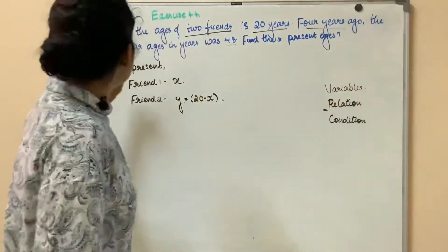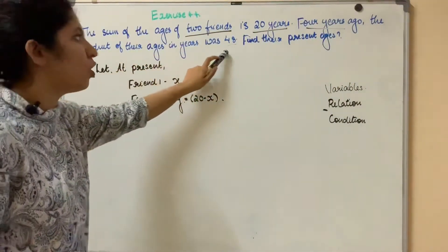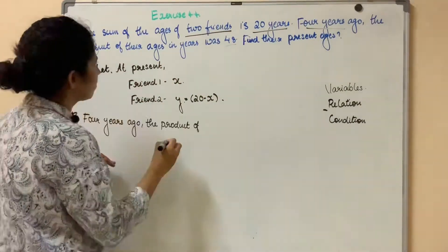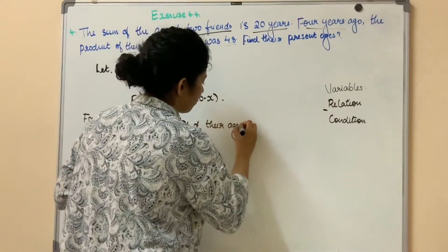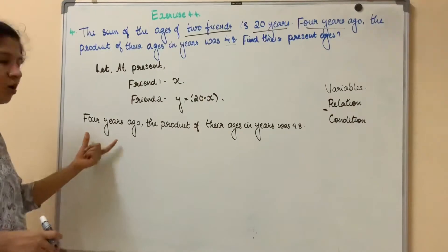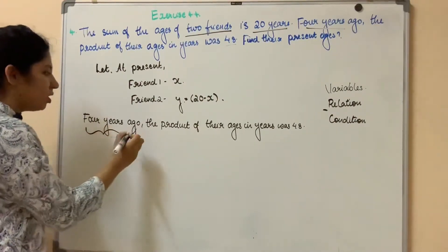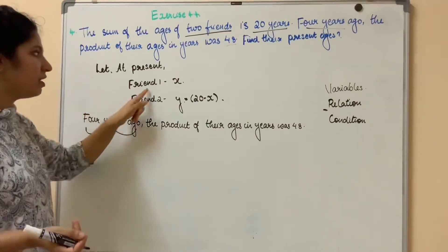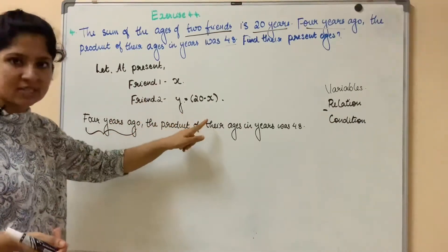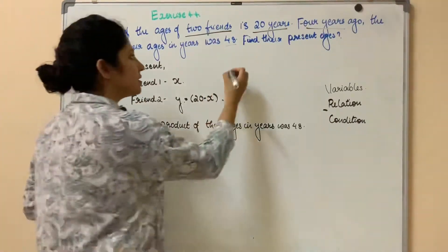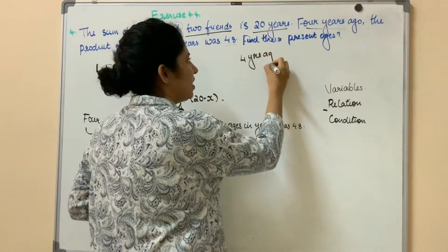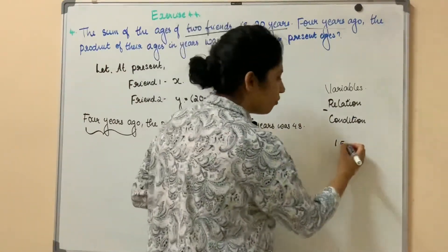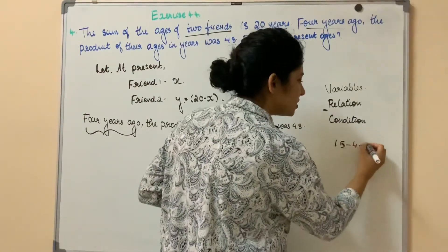4 years ago, the product of their ages in years was 48. Let me explain: 4 years ago, the two friends' ages changed. At present, Friend 1 is x and Friend 2 is 20 minus x. For example, if the present age is 15, then 4 years ago it was 15 minus 4, which equals 11 years.